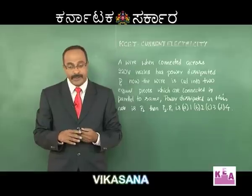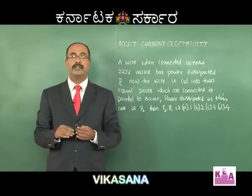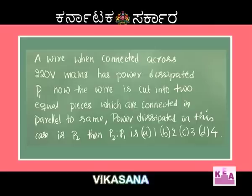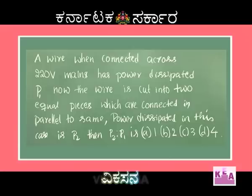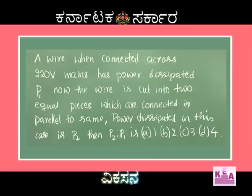Now let us discuss the next problem. A wire when connected across 220 volt mains has power dissipated P1. The wire is cut into two equal pieces which are connected in parallel to the same mains. Power dissipated in this case is P2. Then P2 to P1 is: option A is 1, option B is 2, option C is 3, option D is 4.